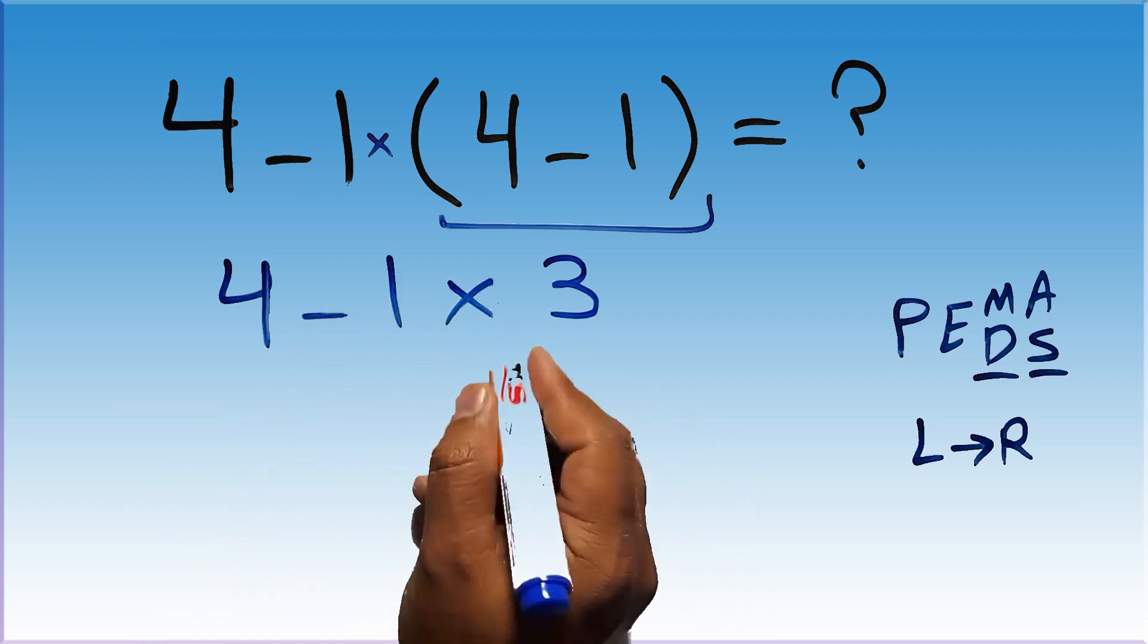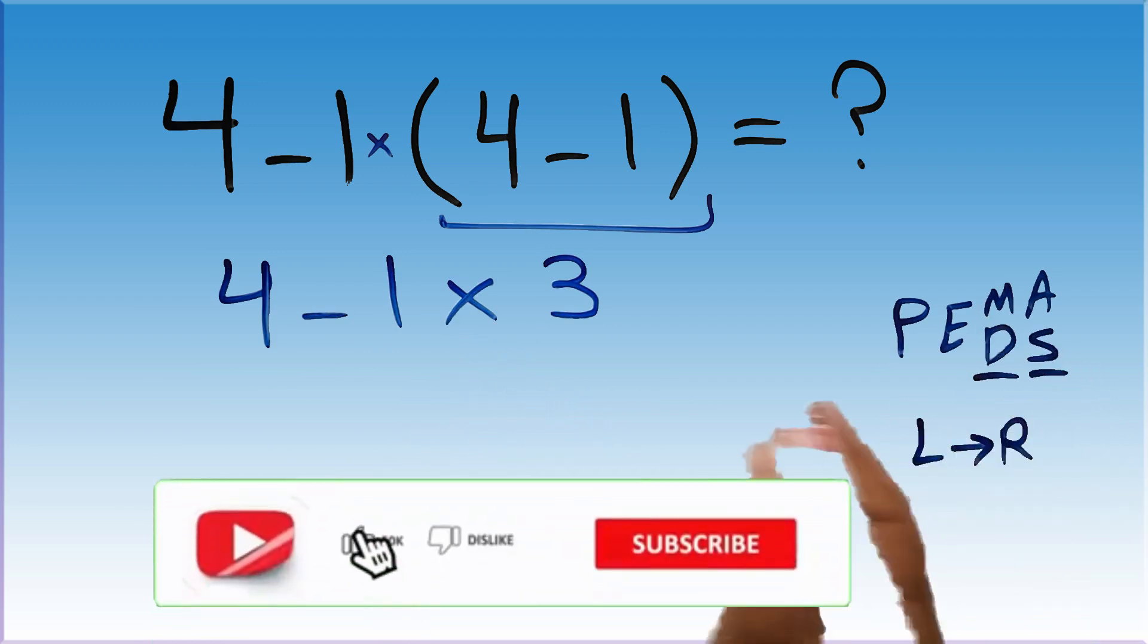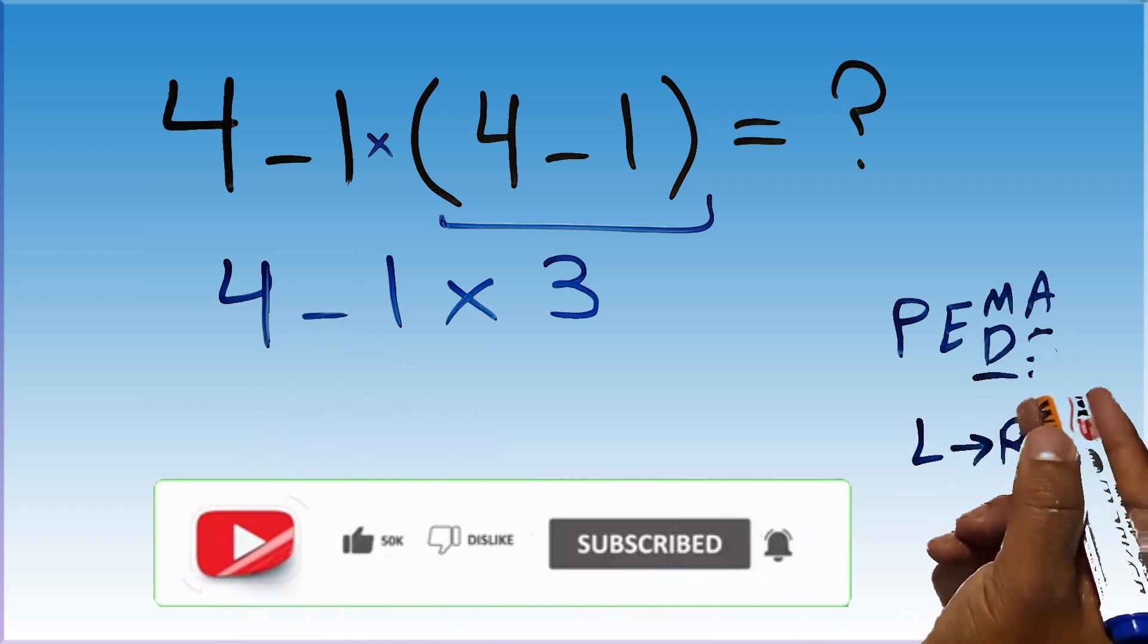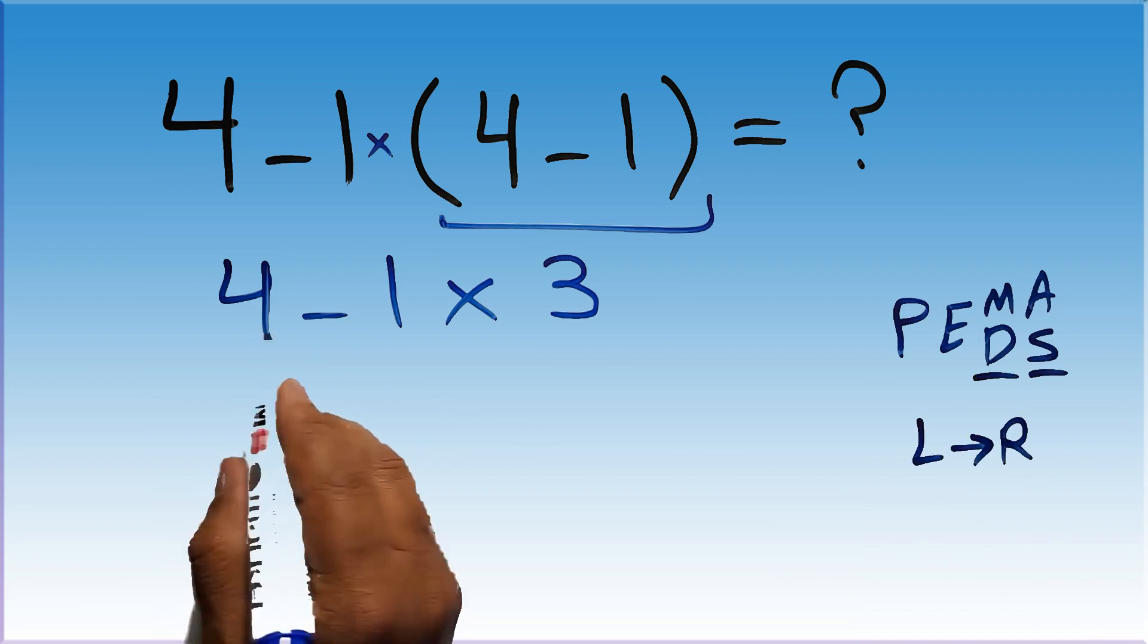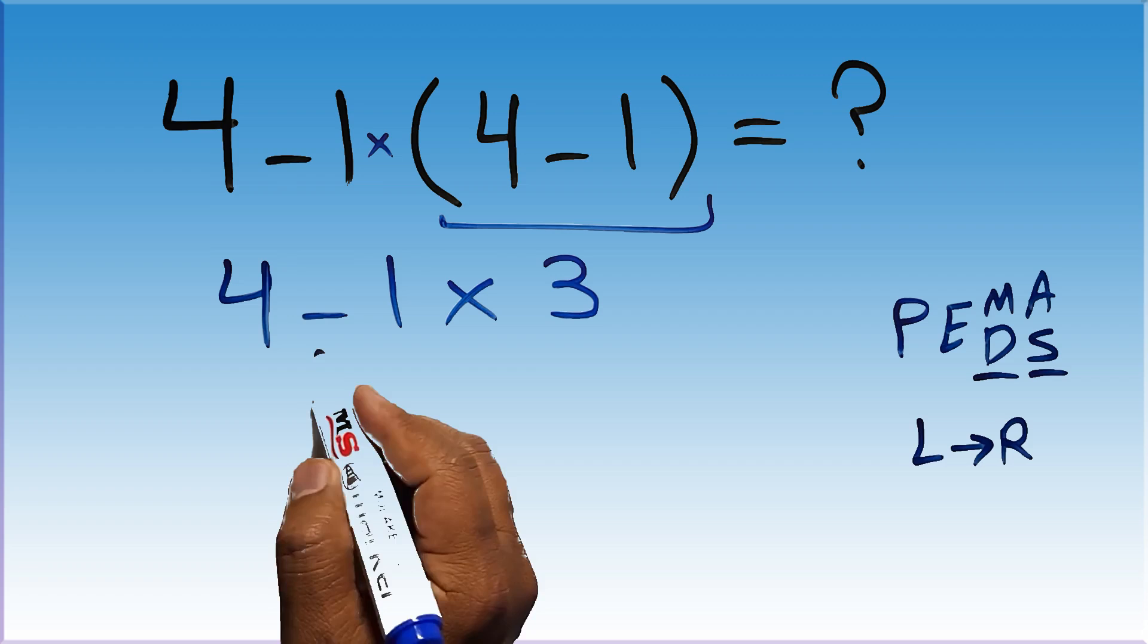Now we have one subtraction and one multiplication. According to the PEMDAS, multiplication has higher priority than subtraction, because multiplication comes before subtraction. So here, first we have to do this multiplication, then this subtraction.